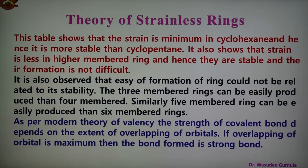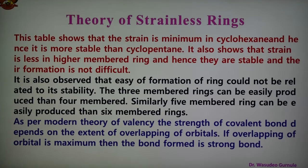It is also observed that ease of formation of a ring could not be related to its stability. The 3-membered ring can be more easily produced compared to the 4-membered ring. Similarly, the 5-membered ring can be more easily produced compared to the 6-membered ring. As per the modern theory of valence, the strength of a covalent bond depends upon the extent of overlapping of atomic orbitals. Greater the overlapping, stronger the bond formed.